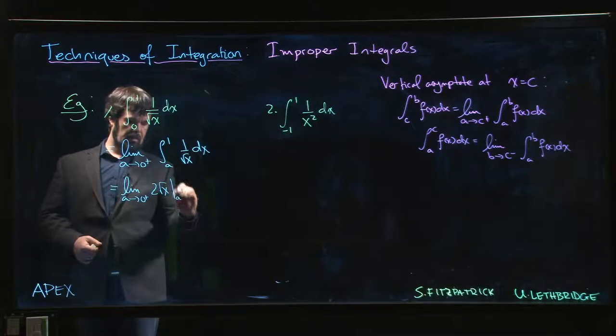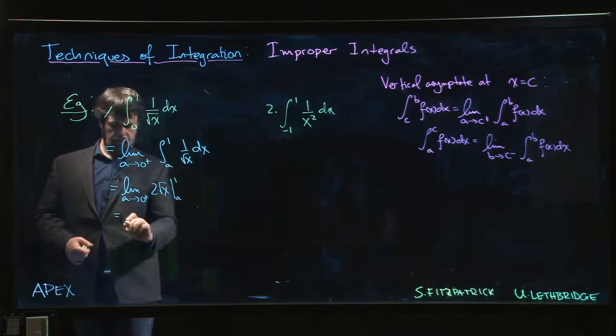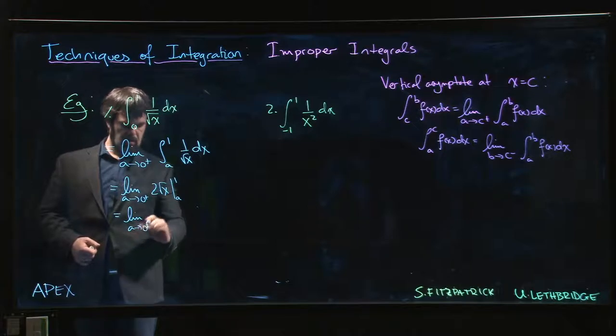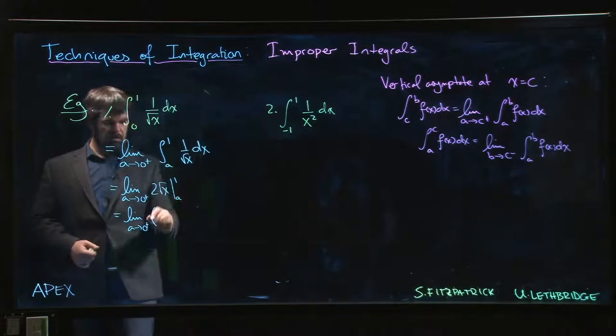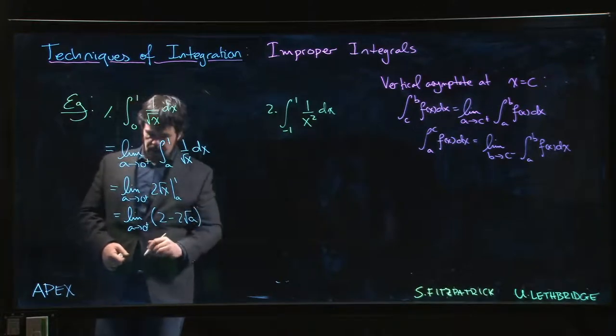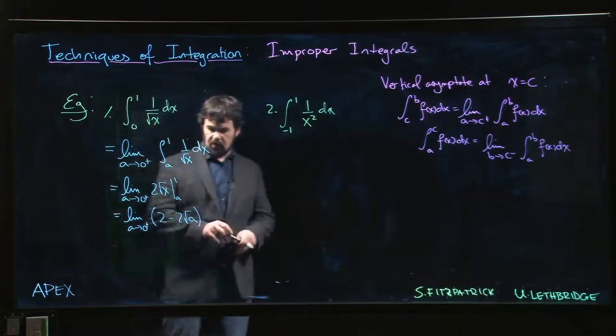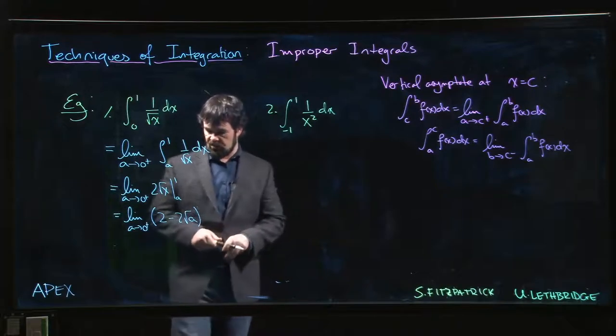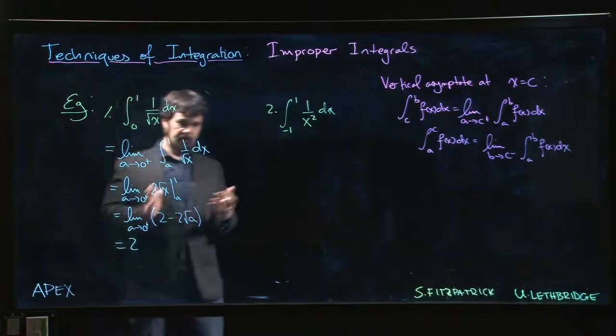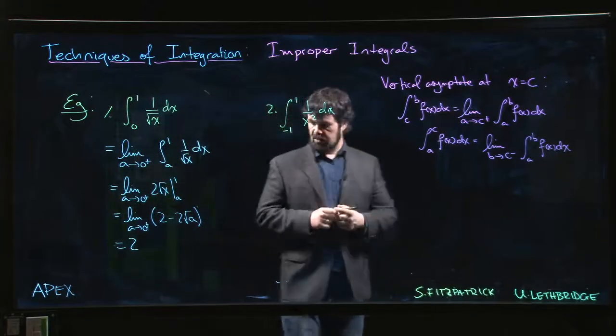Now that's x to the minus one-half, so power rule says that we're going to get two root x, and we evaluate from a to one. So we have the limit a going to zero from the right: two times root one, so two minus two root a. And of course as a goes to zero from the right, root a also goes to zero, so we get a limit of two.